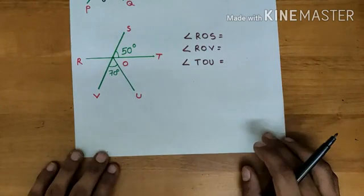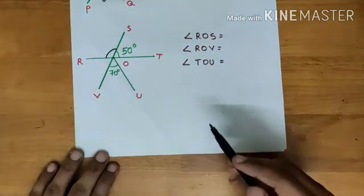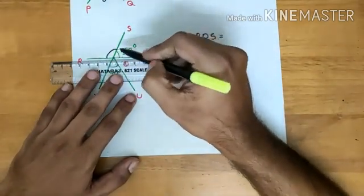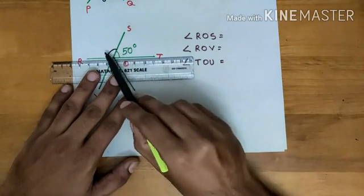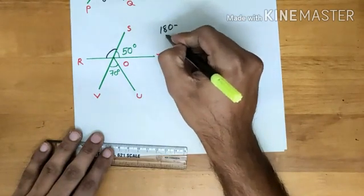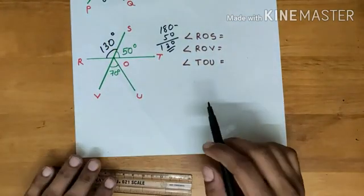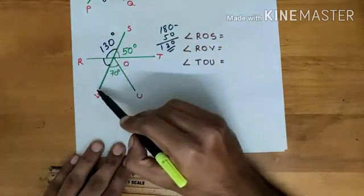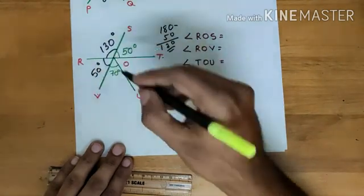Now the third problem. Not considering these two lines, it is again a linear pair. It is given as 50 degrees. The sum of these two angles must be 180 degrees, so this angle must be 180 minus 50, which is 130 degrees. Angle ROL is the opposite angle to SOT. SOT is given as 50 degrees, so ROL must also be 50 degrees.